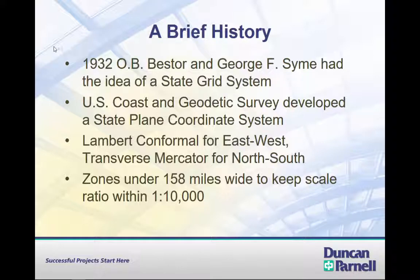There are a couple of different projections used in state plane. A projection is where we take a rounded surface and project it onto a flat surface. We use a Lambert conformal projection for states that are longer east-west, like North Carolina and Tennessee, and we use the transverse Mercator projection for states that are longer north-south, like Georgia and Alabama. Zones in the state plane system are kept less than 158 miles wide in order to keep the scale ratio within 1 to 10,000.